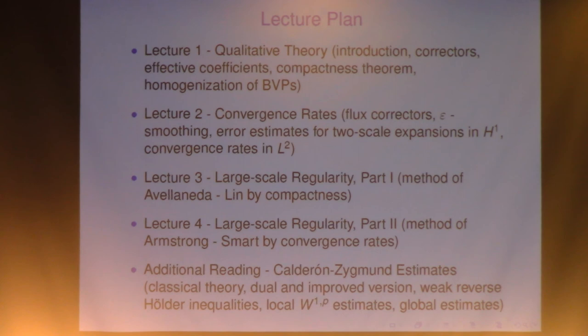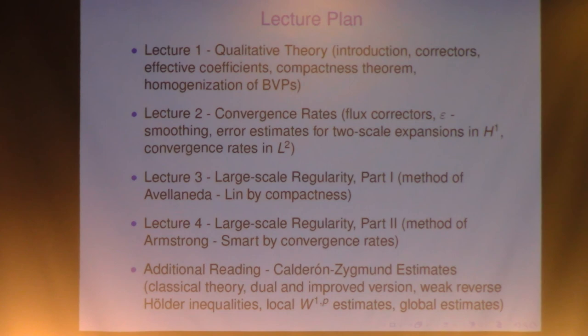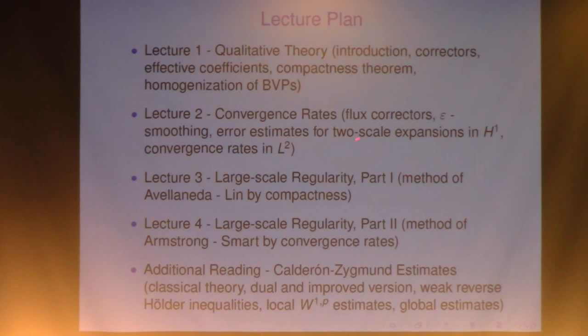In lecture two, tomorrow, we're looking at the problem of convergence rates. There is something called flux correctors. It has to be used in order to derive the sharp estimate. And then we'll look at the error estimates for two-scale expansions in space H¹ and also sharp convergence rates in L².